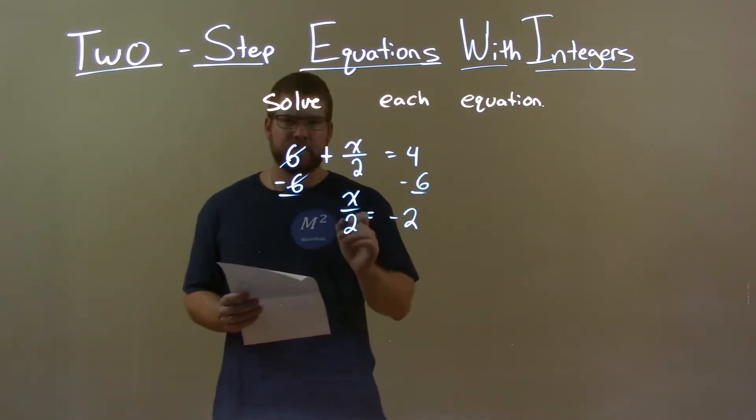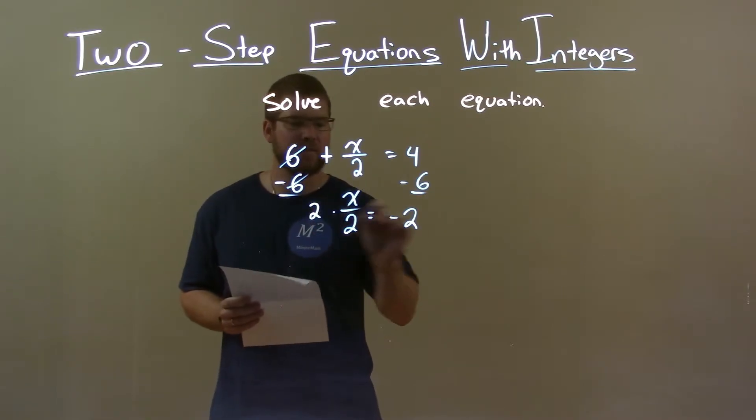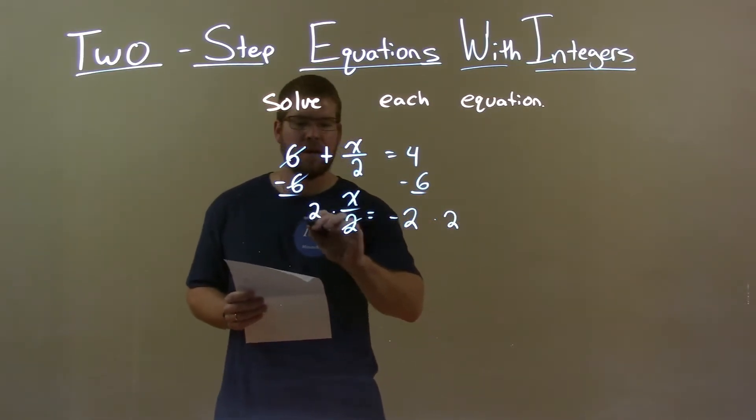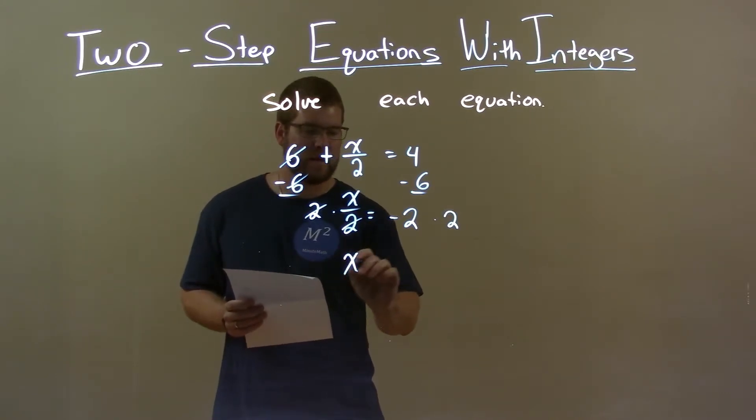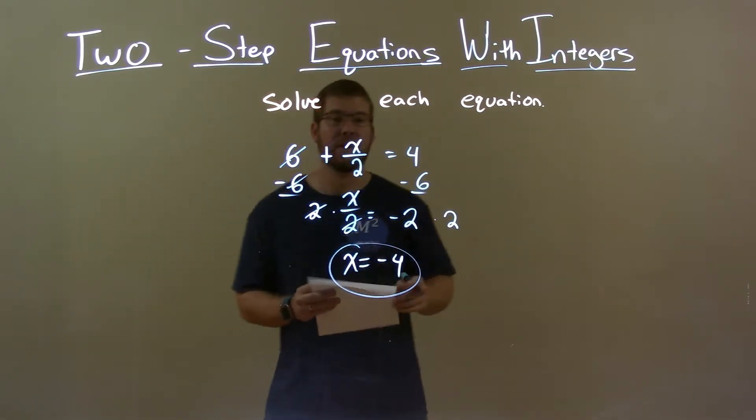We're divided by 2 here. Opposite of division is multiplication. So I multiply both sides by 2. This 2 gets cancelled out, and we have x by itself here. Negative 2 times positive 2 is negative 4. And so my final answer here is x equals negative 4.